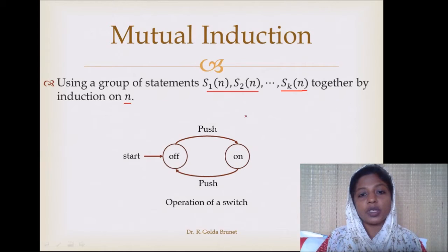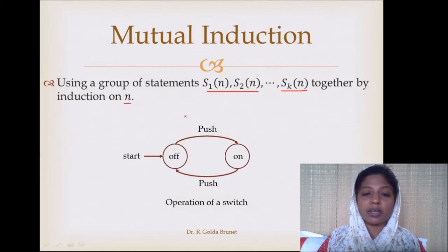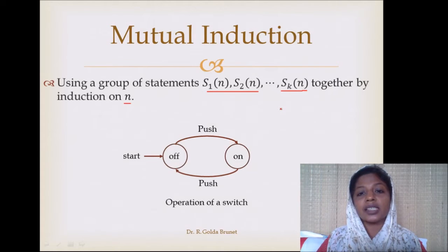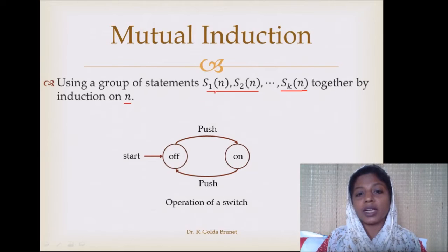What is the difference between mutual induction and general induction? In general induction we have a single statement S of n, and we will use several basis statements: S of i, S of i+1, etc., up to S of j, where j is greater than or equal to i. But in mutual induction we have different statements altogether — S1 of n is different from S2 of n and so on.